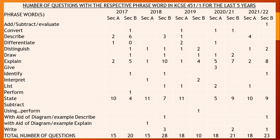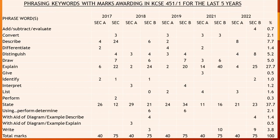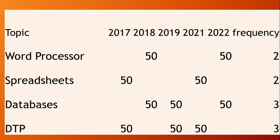We can also look at phrasing keywords with the marks awarded in KCSE paper 1. Phrases include add, subtract, evaluate, and convert, showing how marks are distributed across different question types.